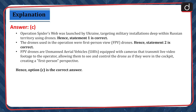The correct answer is option C. Operation Spider's Web was launched by Ukraine targeting military installations deep within Russian territory using drones. Hence, statement 1 is correct. The drones used in the operation were first-person view drones. Hence, statement 2 is correct. FPV drones are unmanned aerial vehicles or UAVs equipped with cameras that transmit live video footage to the operator, allowing them to see and control the drone as if they were in the cockpit, creating a first-person perspective. Hence, option C is the correct answer.